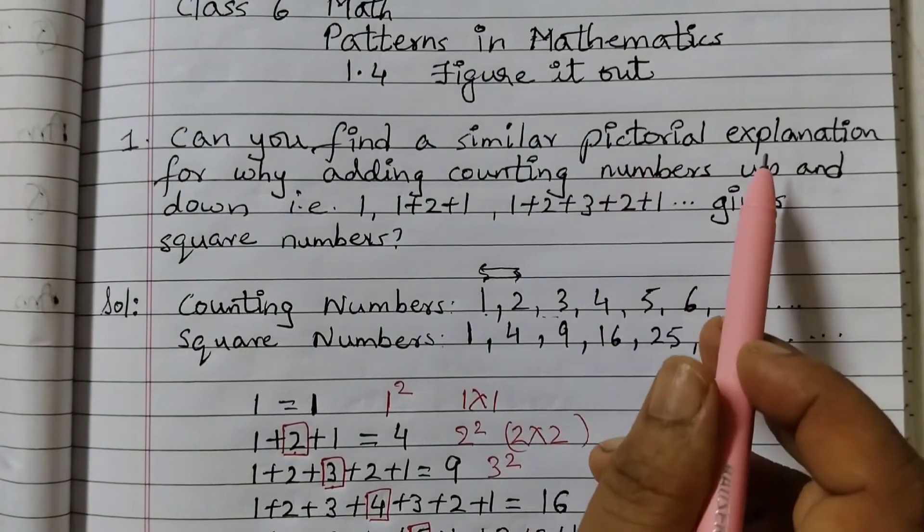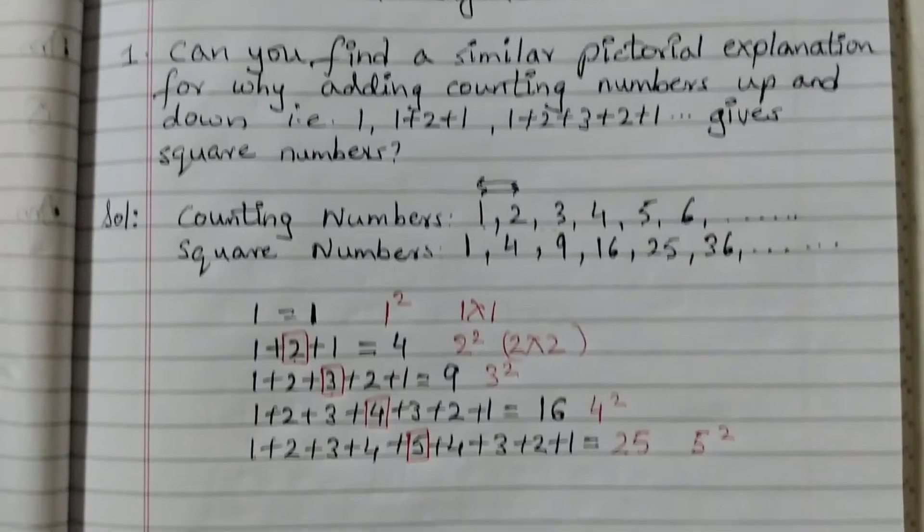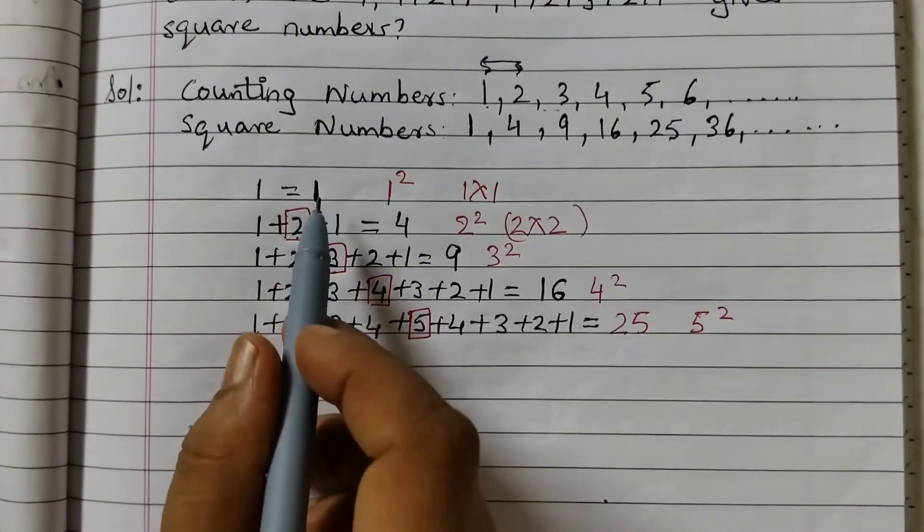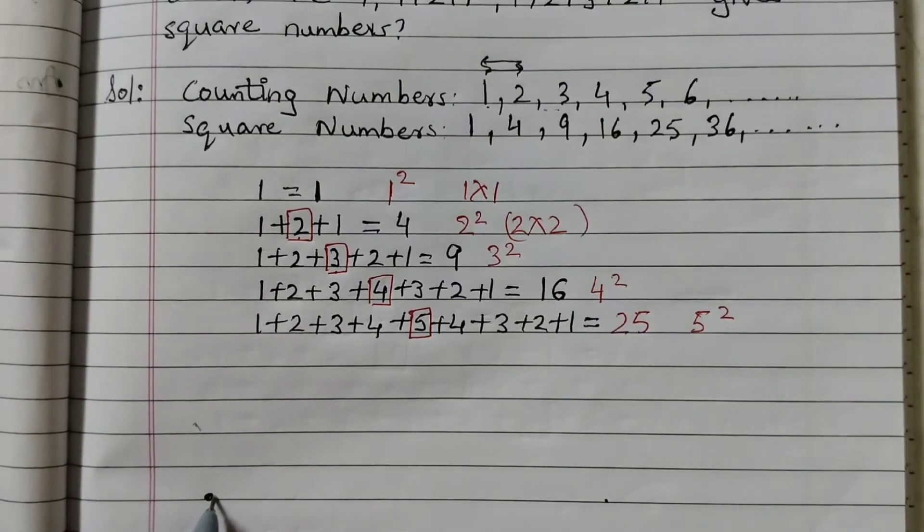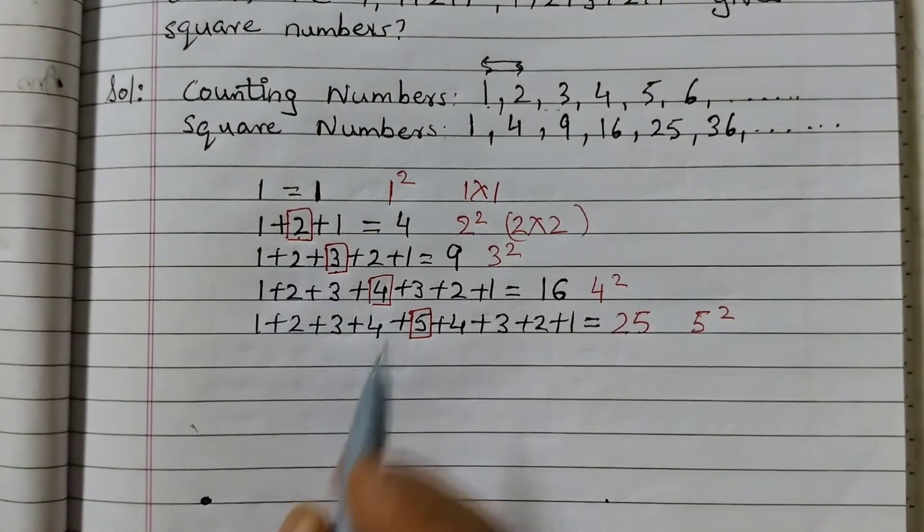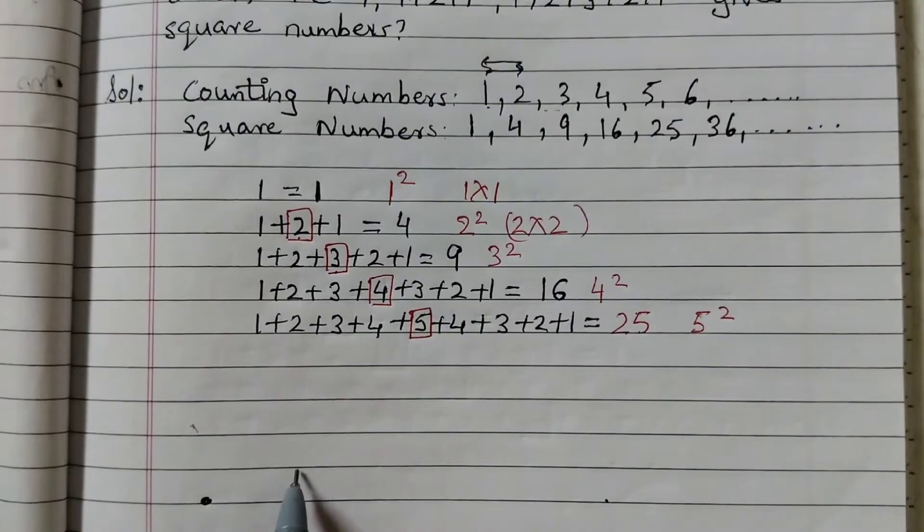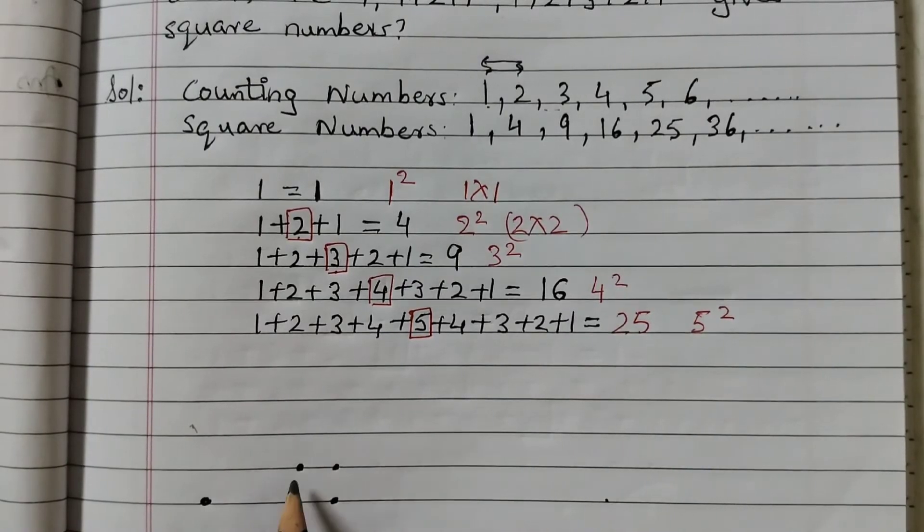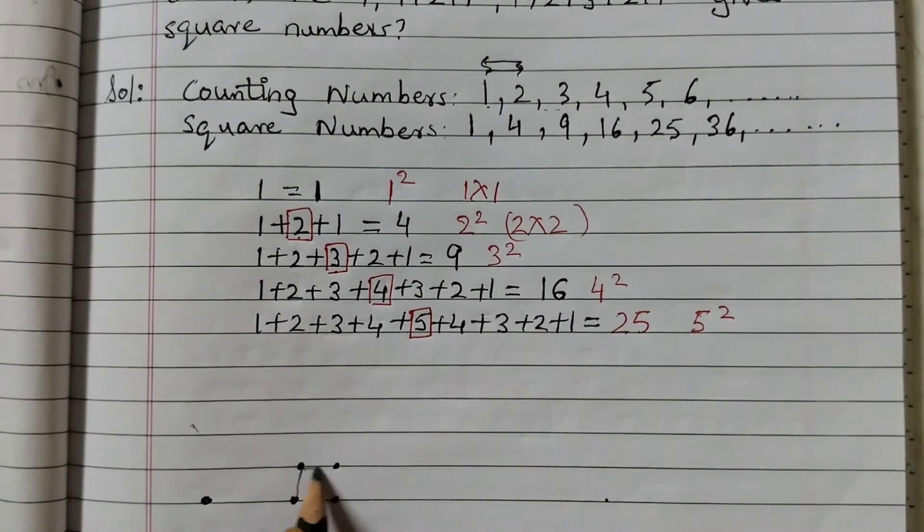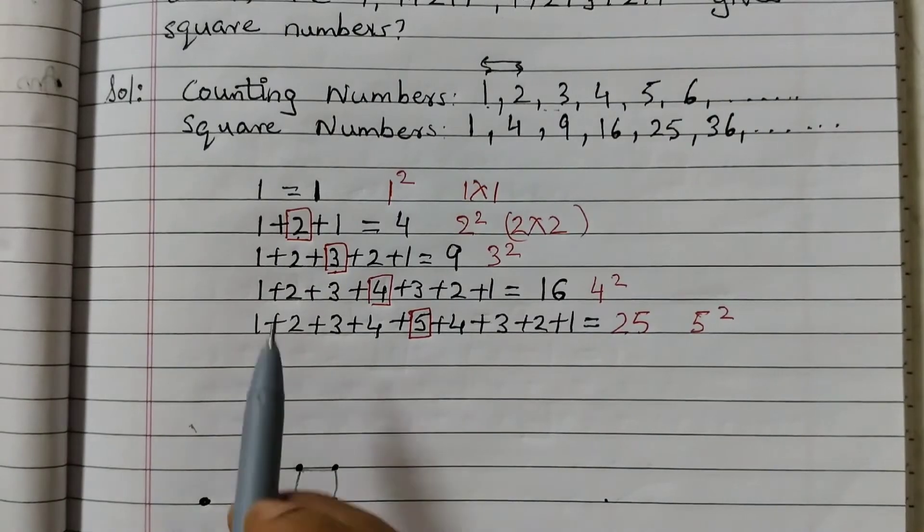We need to find a pictorial explanation for this. Using picture, you need to show. So let's do that. First one, we will show just by 1 dot. 1 plus 2 plus 1. So 1 dot, 2 dots like this you do. 2, 1, 2 and then 1. So 1, 1, 2, 1. See if I join this, a square will be formed.